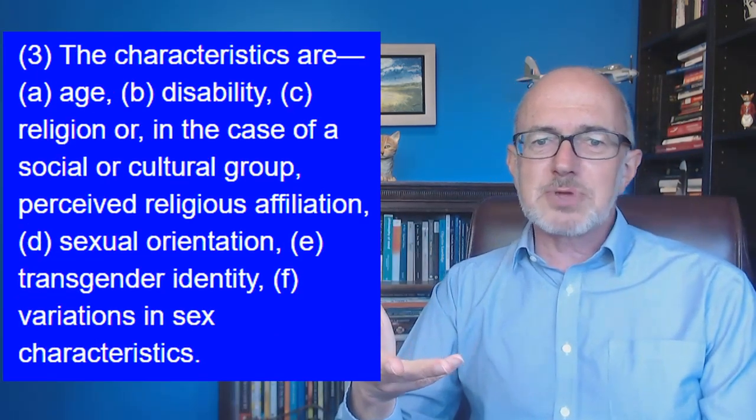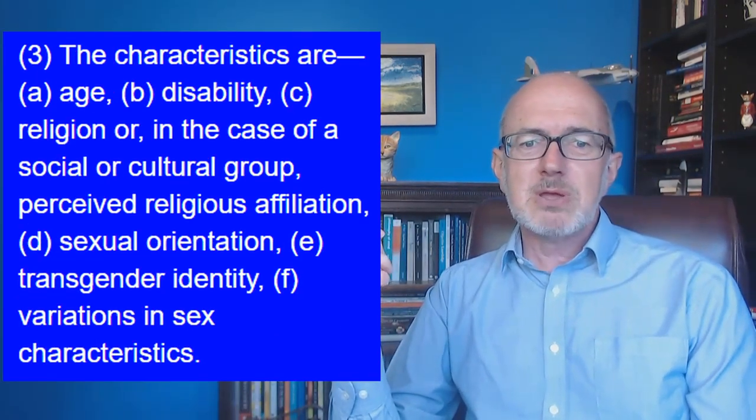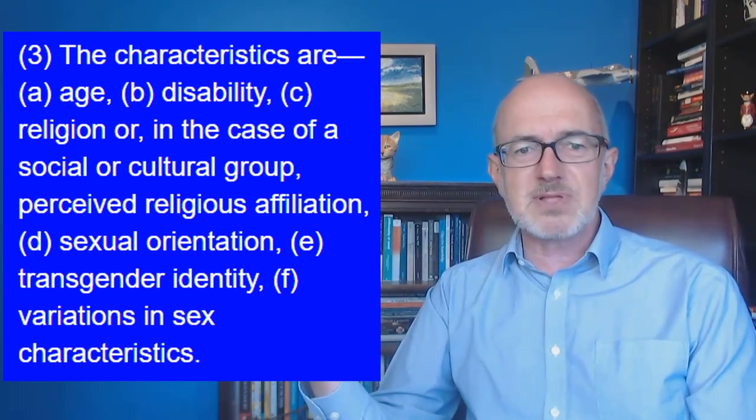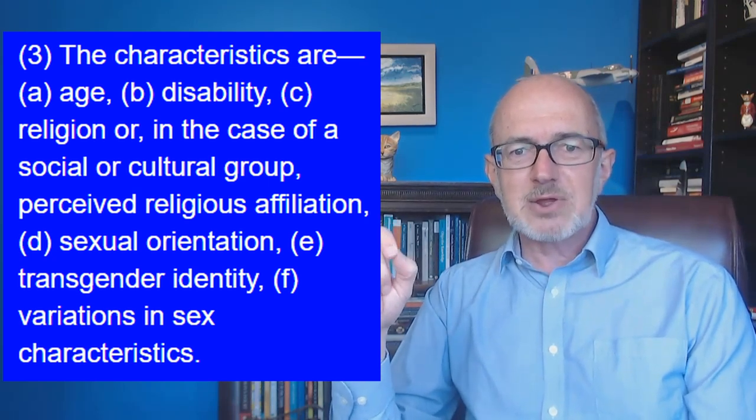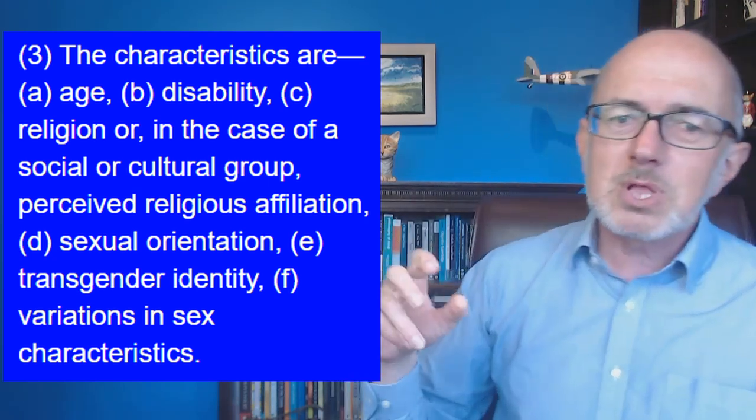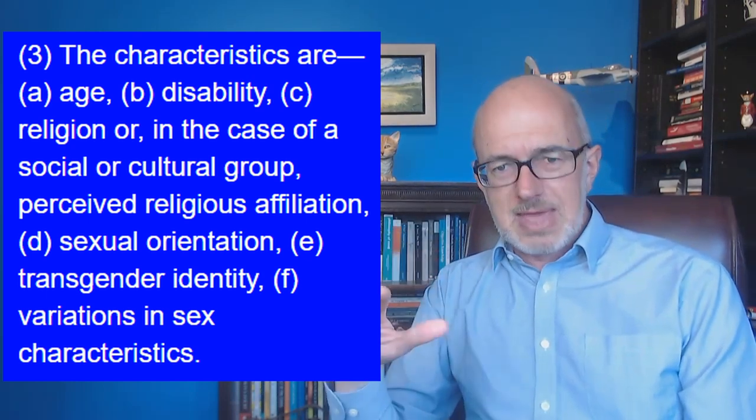The protected characteristics are age, disability, religion or perceived religious affiliation, sexual orientation, transgender identity, variations in sex characteristics. All the ones related to race and nationality are in a separate bit, which is pretty well the same, but the only difference is when it comes to a different race or nationality, it says if you behave in a threatening, abusive, or insulting manner. So insulting is included as well.